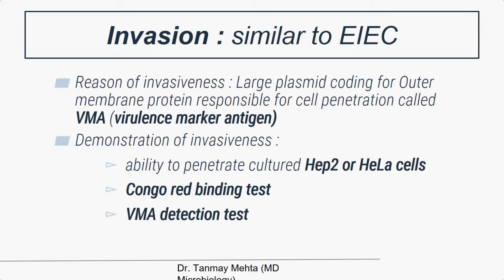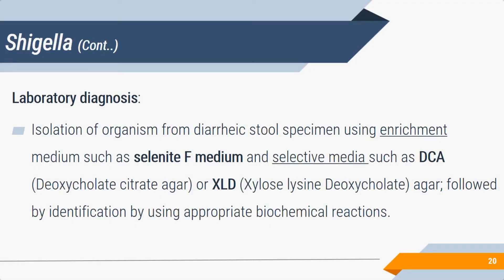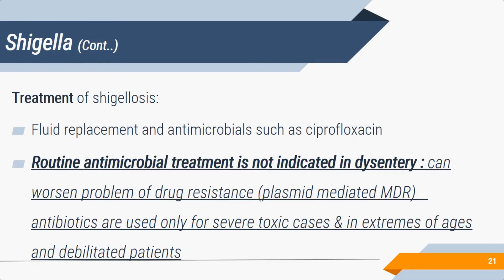Invasiveness can be demonstrated in HeLa cell cultures or by detecting the virulence marker antigen using ELISA. Bacilli infect epithelial cells of the large intestine, multiply inside, spread laterally, cause inflammation and thrombosis leading to necrosis and bloody diarrhea. Stool sample is collected and placed in enrichment medium — selenite F broth — then plated on selective media like deoxycholate citrate agar and xylose lysine deoxycholate agar. Treatment is primarily fluid replacement; antimicrobials are generally not indicated unless the disease is very severe, as antibiotics may worsen severity.